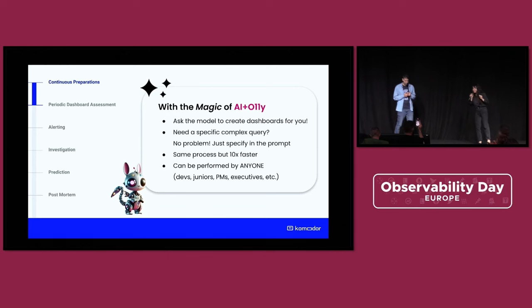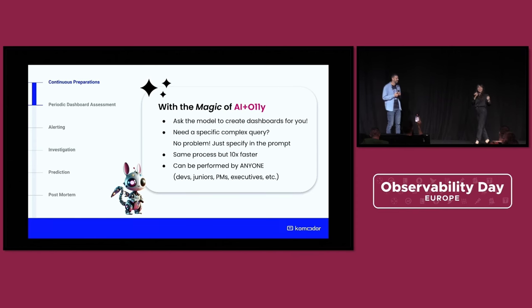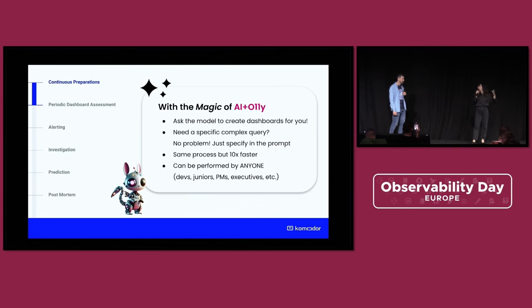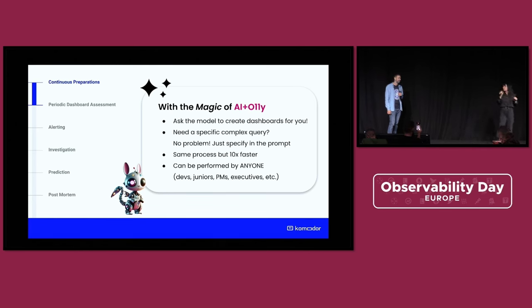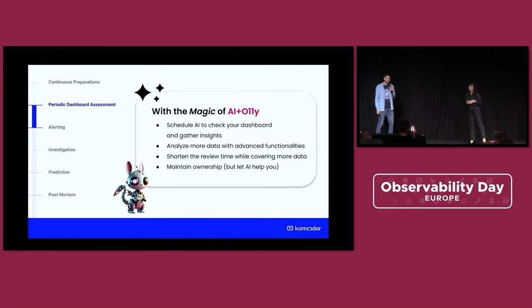But maybe when we add the magic of AI to the continuous preparation step, the model will create the dashboard for us. And actually it's not that futuristic, because even nowadays we can create YAMLs using AI, and it makes things so much easier. It can create complex queries for us — we don't need so much knowledge or experience to create a good dashboard or good observability. And the DevOps or operations person is no longer a bottleneck, because with AI even a junior developer or product person can create queries and dashboards by themselves.